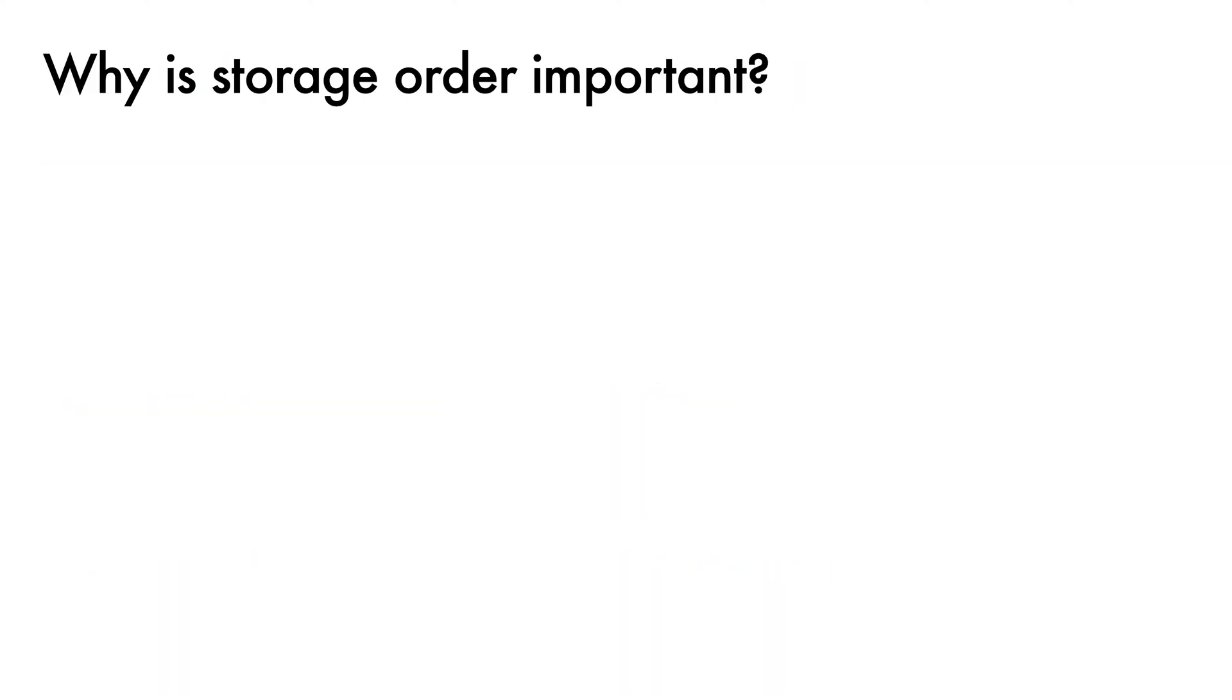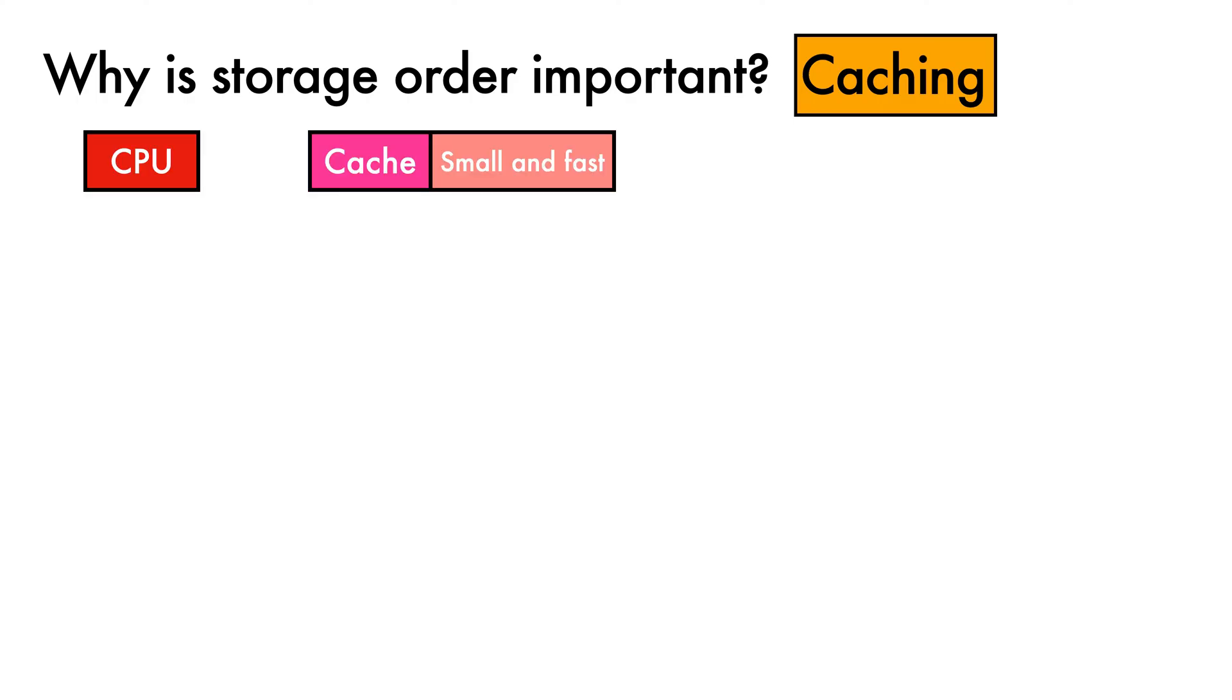Why is storage order important in practice? A key reason relates to the caching used by processors to accelerate their execution. Let's consider a simplified system, where we have a CPU, a nearby CPU cache, which is small and fast, and then, in a galaxy far far away, main memory, which is both large and slow to access, at least when considered relative to the cache.